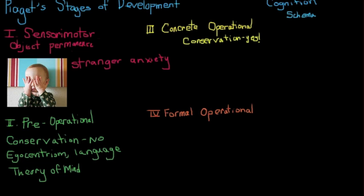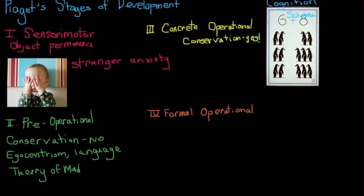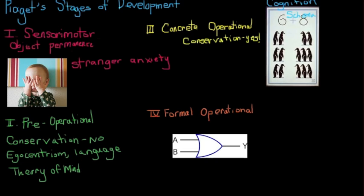Moving on to concrete operational. At this point, this is between seven to 11. At this point, they do have a concept of conservation. They'll understand that volume is not affected by the shape of a container. They're also able to do math at this point in such a way that if you ask them, what's six plus eight? They'll say 14. What's 14 minus eight? They'll say six. They'll be able to reverse those math equations immediately. So it's the very start of logic.